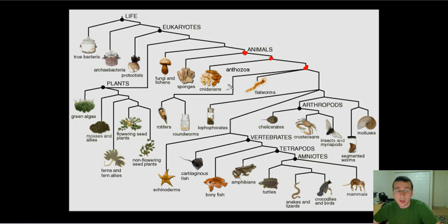The next big split over here is going to be how you develop your embryo. Remember, everybody in this branch is going to have true cavities and are going to be called coelomates.